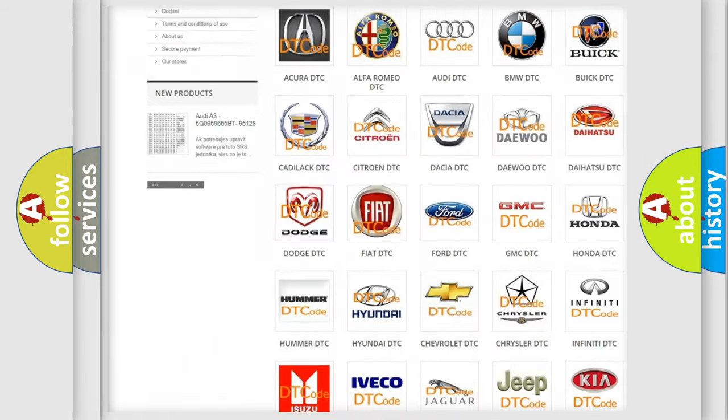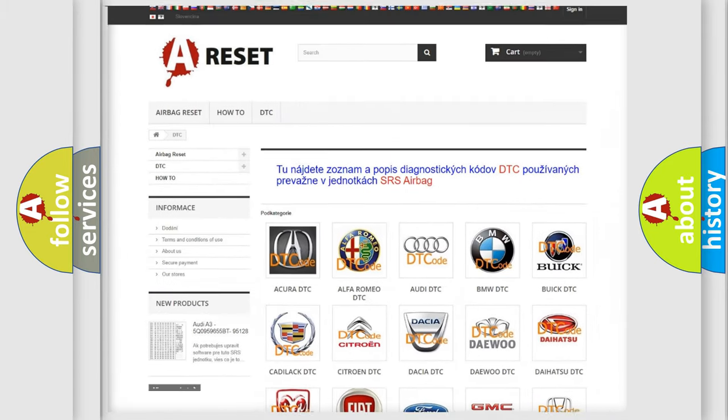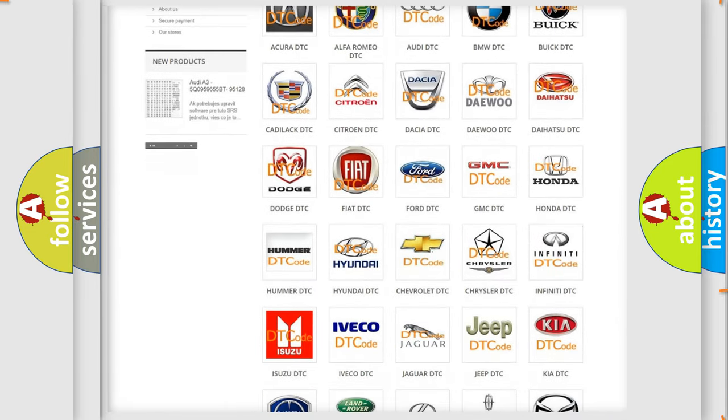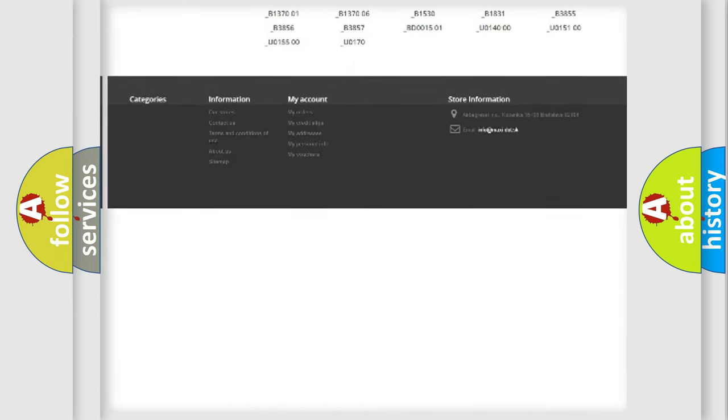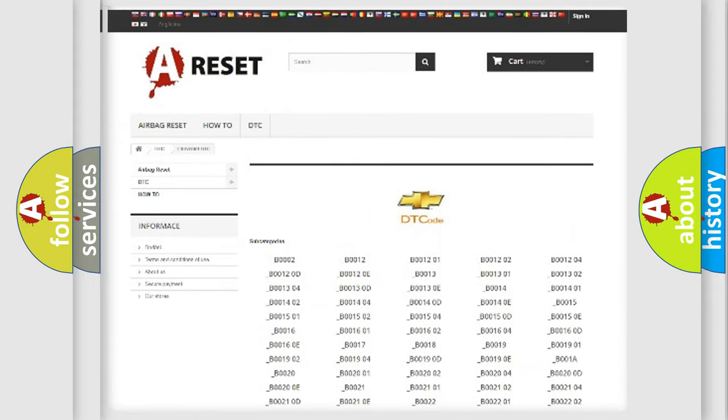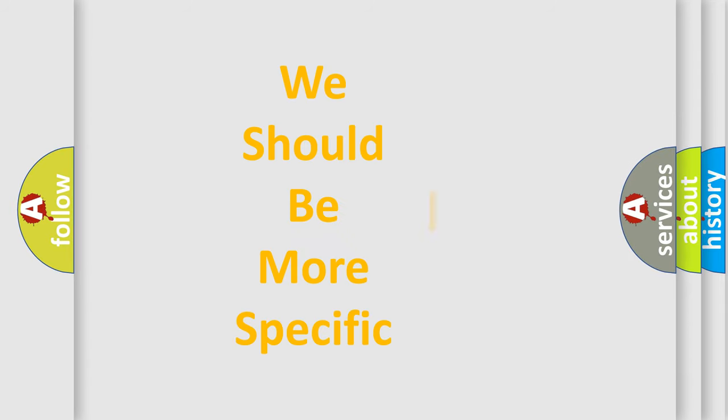Our website airbagreset.sk produces useful videos for you. You do not have to go through the OBD2 protocol anymore to know how to troubleshoot any car breakdown. You will find all the diagnostic codes that can be diagnosed in Chevrolet vehicles, and many other useful things. The following demonstration will help you look into the world of software for car control units.